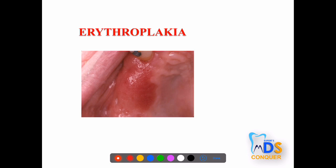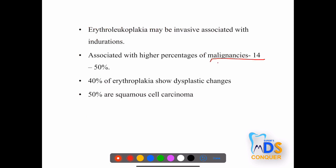Coming to pre-malignant lesions, erythroplakia is a type of leukoplakia with a tendency to convert into malignancy. It shows a typical reddish lesion and importantly has a malignant association of 14 to 50 percent — that percentage is important to remember. It also shows dysplastic features.